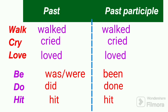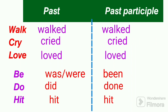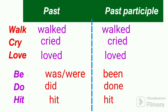For example, the verb walk changes into past and past participle forms with the addition of the suffix ed. For the verb cry, y is removed and ied is added to form the past and past participle forms — that is, cried. The verb love changes to past and past participle forms only with the addition of d, because it ends with e.